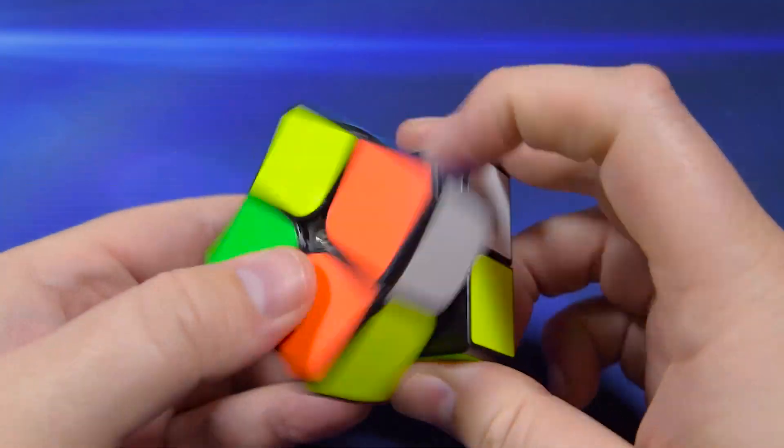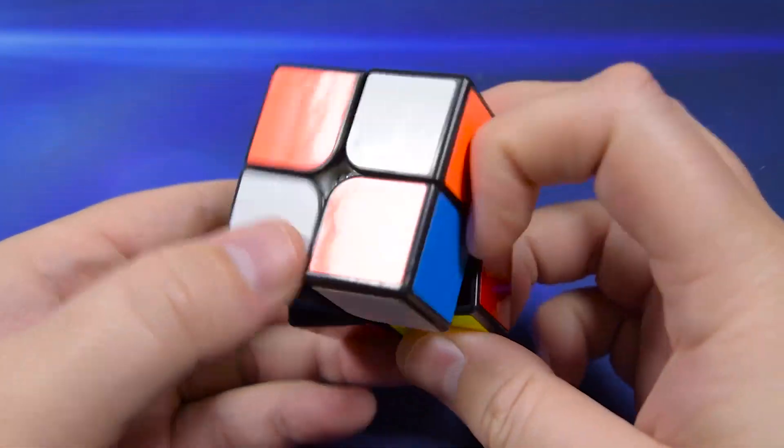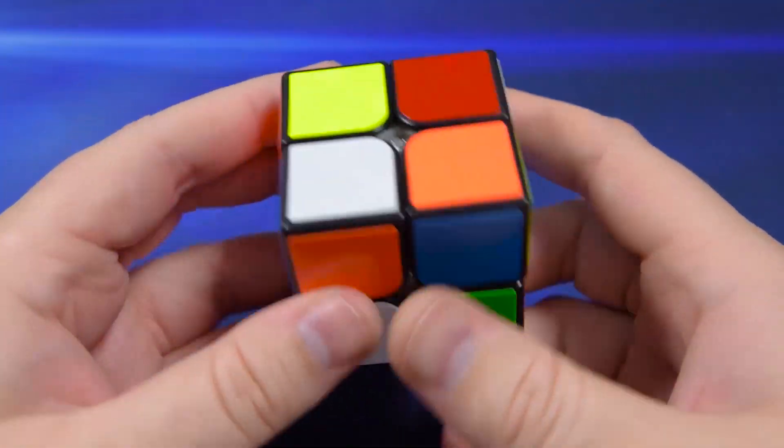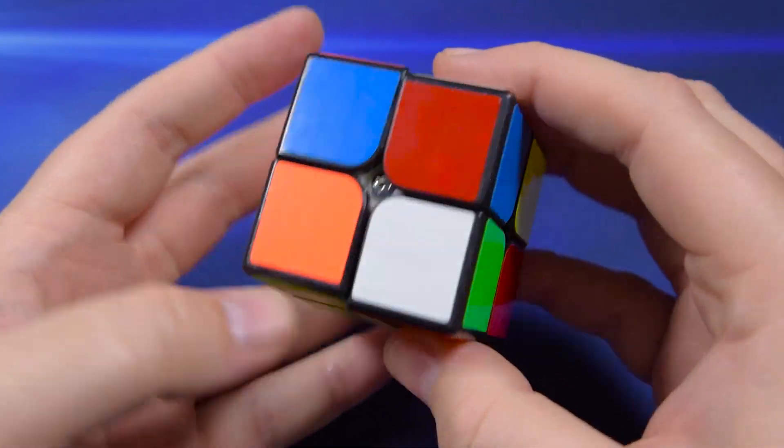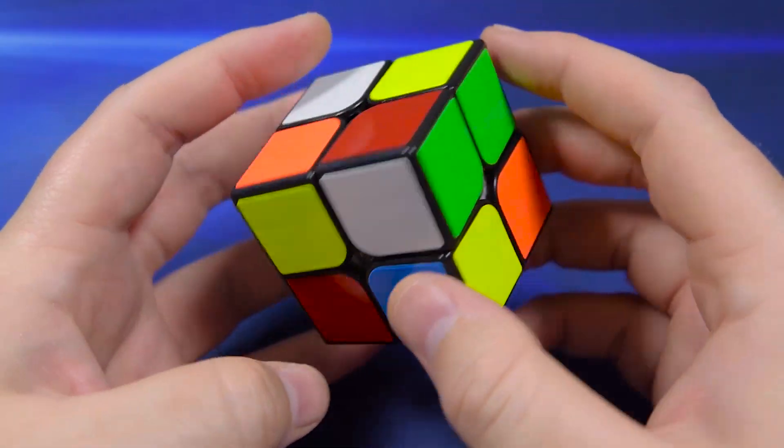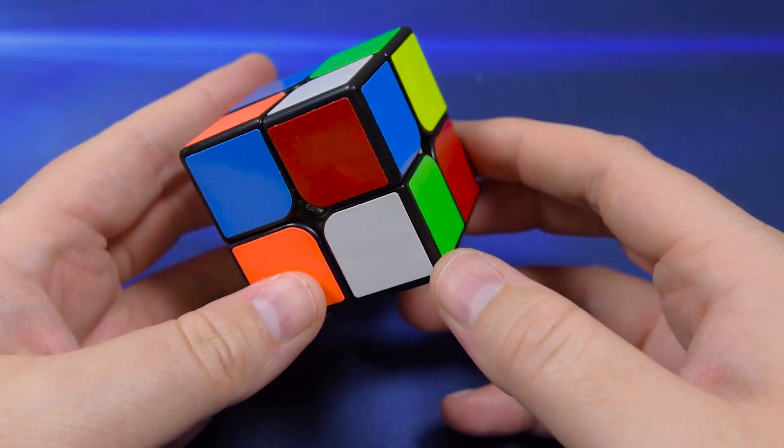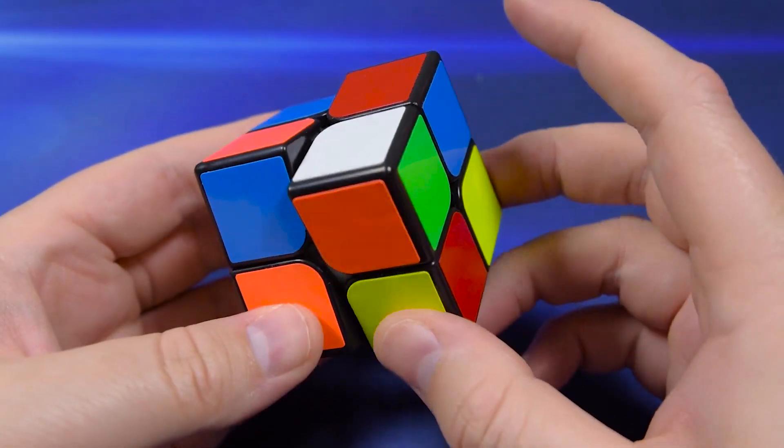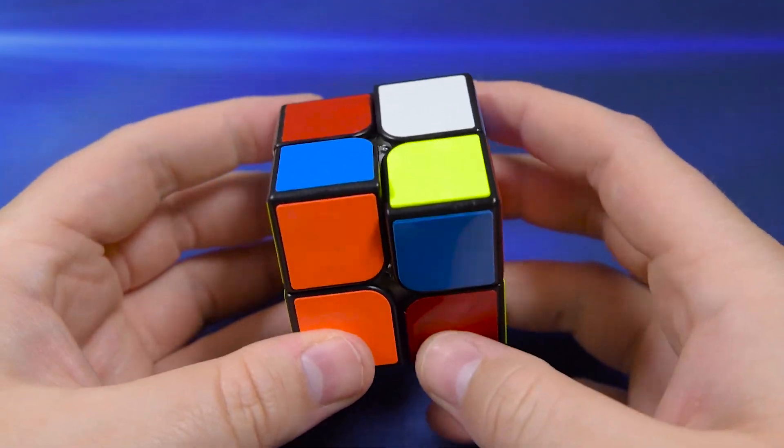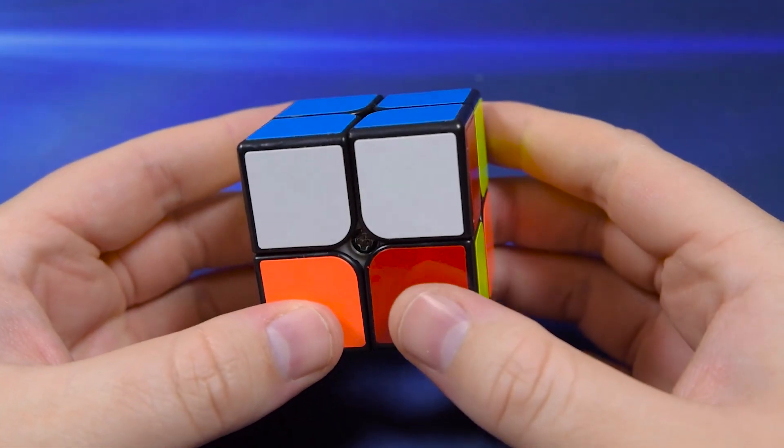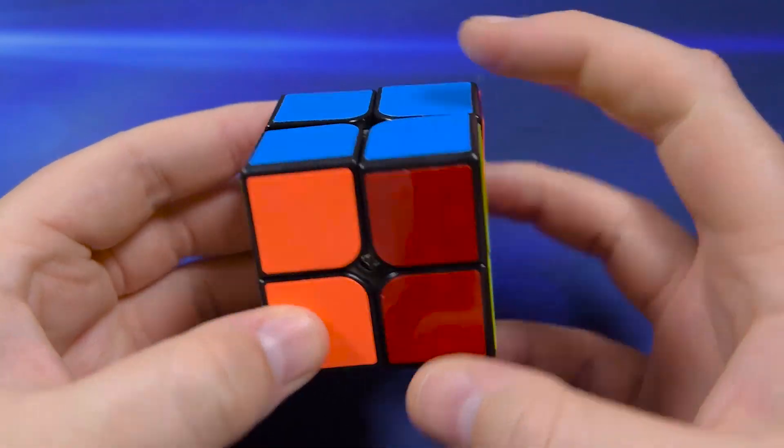Let's do a scramble here and show you guys how bad I am at 2x2. Let's see, that looks good. And wow, I mistakenly gave myself a decent scramble, so I'll do like that green side, got it soon on top, and then...